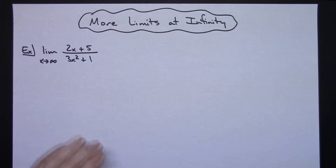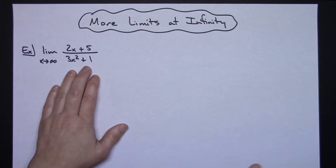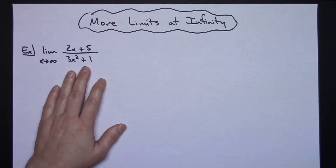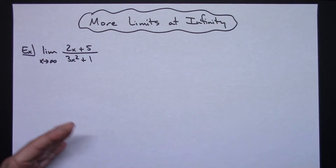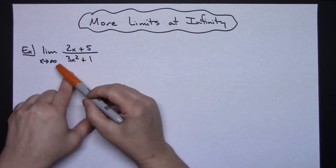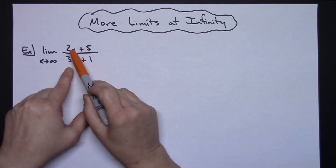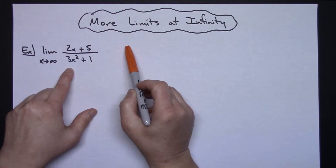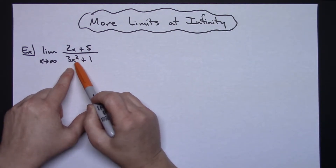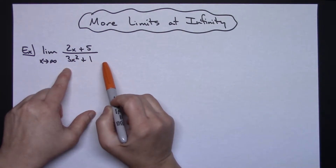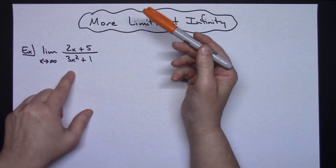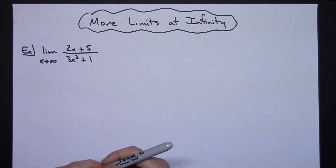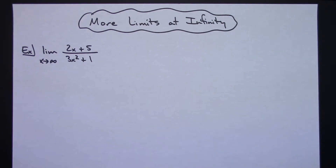In this first example, I've got the limit as x approaches infinity of a rational function with 2x plus 5 in the numerator and 3x squared plus 1 in the denominator. First off, you should always do a direct substitution to make sure you need to do further work. If I plug infinity in, the numerator goes to infinity and the denominator also goes to infinity, so I have infinity over infinity — an indeterminate form — meaning I have to do more work to find that limit.